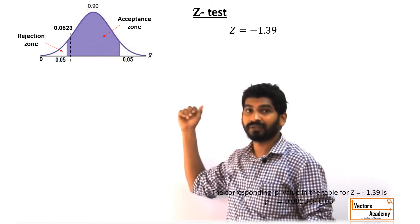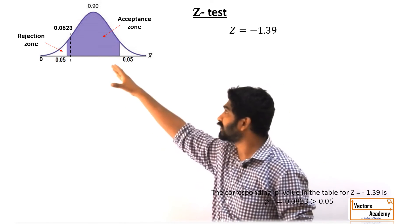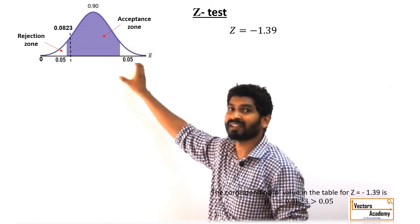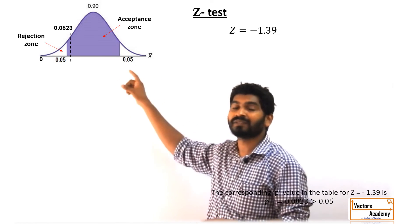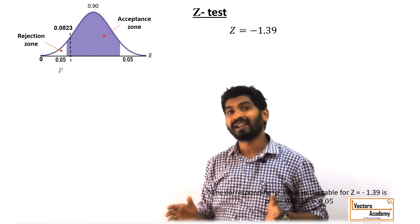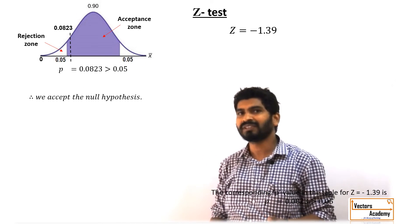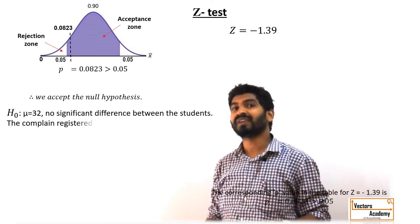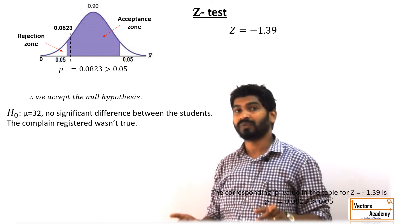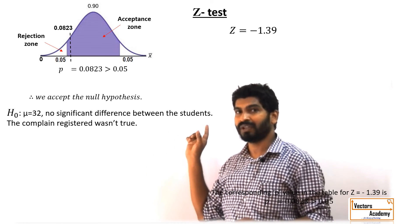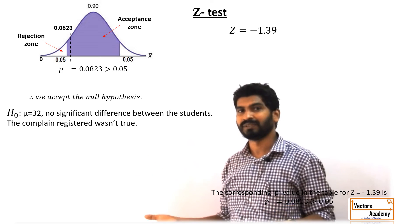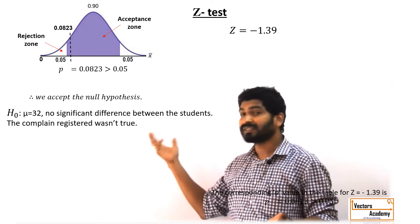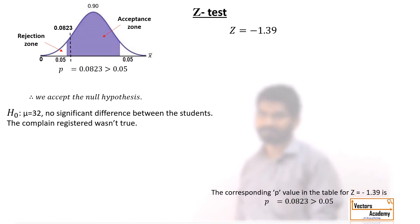You can see the value is greater — it does not lie in the rejection region, it lies in the acceptance region. Hence we accept our null hypothesis. And what was our null hypothesis? That there is no significant difference between the boys of the population and the municipal school. So this is how the Z test is used.